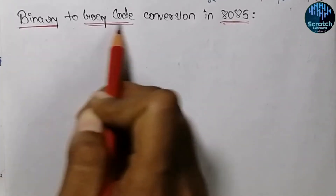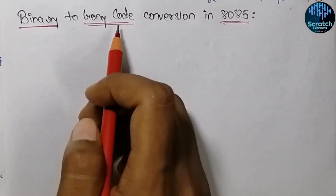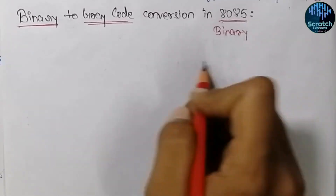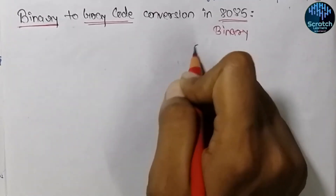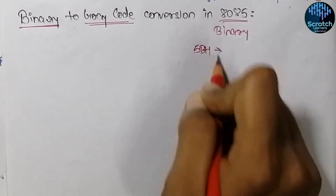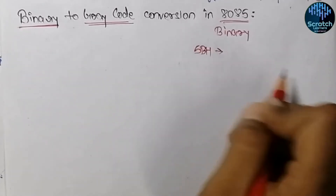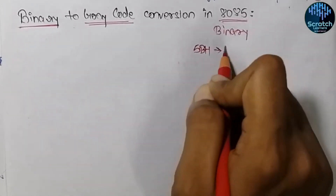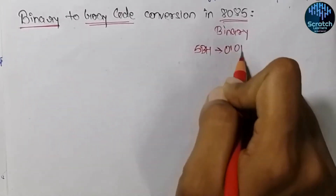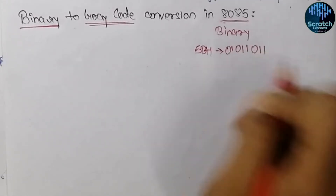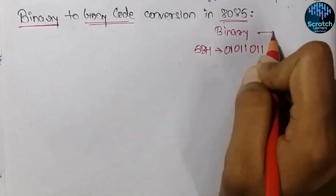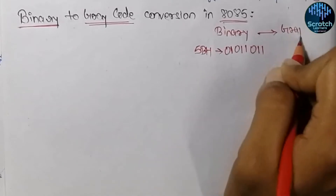So on conversion of binary to grey code, let's consider a binary number 5B hex. If we write it in binary format, what we will get is 0 1 0 1 1 0 1 1, and we need to convert this data into grey code.